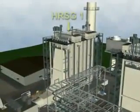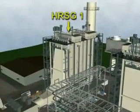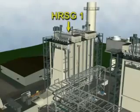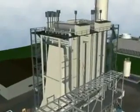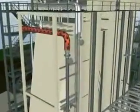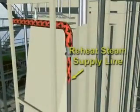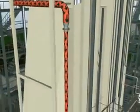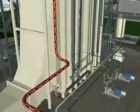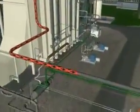The steam turbine uses hot reheat steam to add motive force to the turbine rotor. Reheat steam is a combination of turbine high-pressure exhaust and herzig-generated intermediate steam that is heated and piped to the steam turbine.